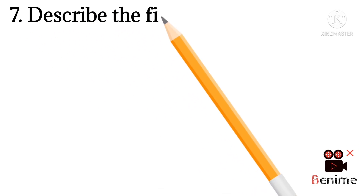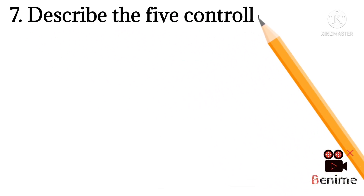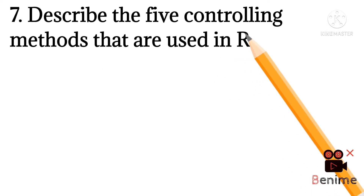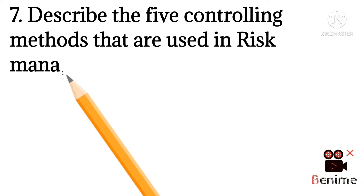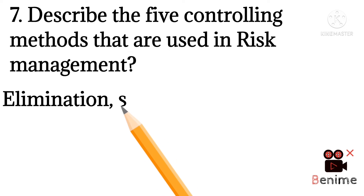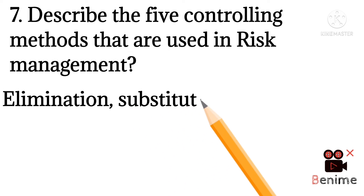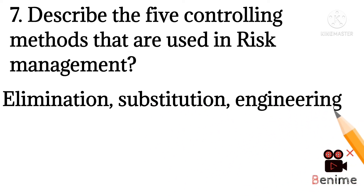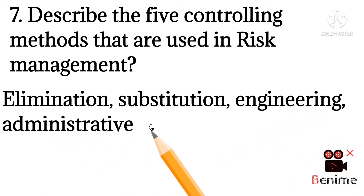Question number seven: describe the five controlling methods used in a risk management system. Number one, elimination; number two, substitution; number three, engineering control; number four, administrative controls; and number five, personal protective equipment. These five controlling methods are used in the risk management system.